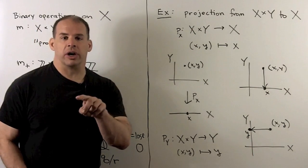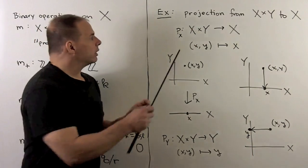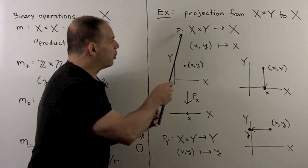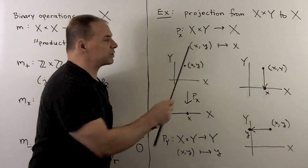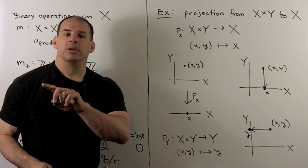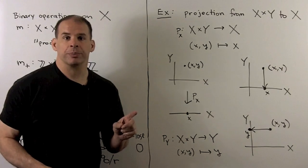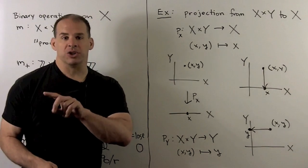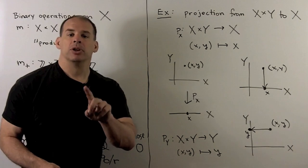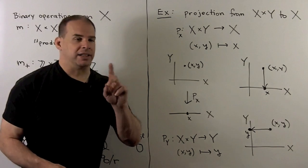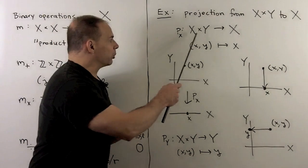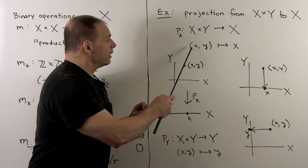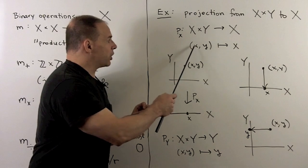Now, while we're considering functions, where we're assigning points from a Cartesian product, we have some more distinguished examples. So, one's going to be projection from Cartesian product of x cross y to x itself. So, the idea here, we're just going to take each ordered pair, pick off the part that goes with x. So, the first entry.